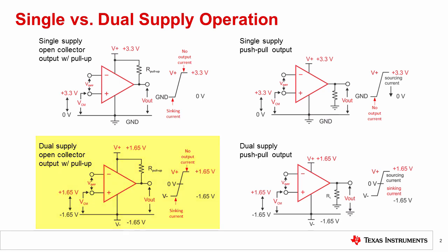In the lower left-hand corner, we have the open collector comparator configured for dual supply. The total supply voltage from V plus to V minus is still 3.3 volts, just shifted such that the mid-supply is now equal to 0 volts. Now V plus is plus 1.65 volts, and V minus is minus 1.65 volts.